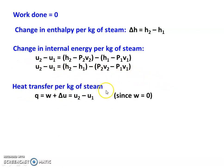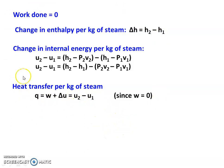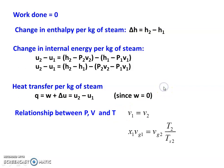For heat transfer: Q equals W plus delta U. Since W equals 0, Q equals U2 minus U1. Using these equations, the problem solution is easier. The relationship between pressure, volume, and temperature: V1 equals V2, so X1·VG1 equals VG2 multiplied by T2 over TES2.